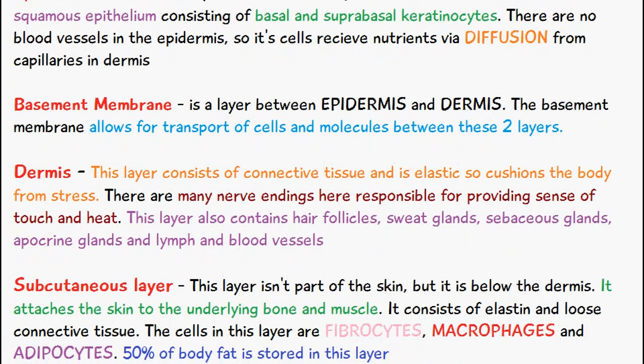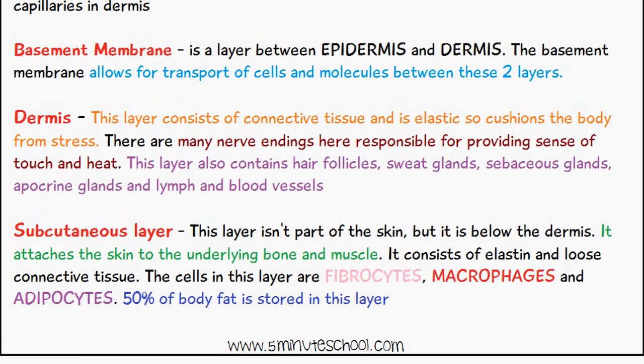The next layer is known as the dermis. This is a layer which consists of connective tissue and it's elastic, so this is what cushions the body from stress. There are quite a lot of nerve endings in this layer responsible for providing the sense of touch and heat. This layer also contains hair follicles, sweat glands, sebaceous glands, apocrine glands, and lymph and blood vessels.